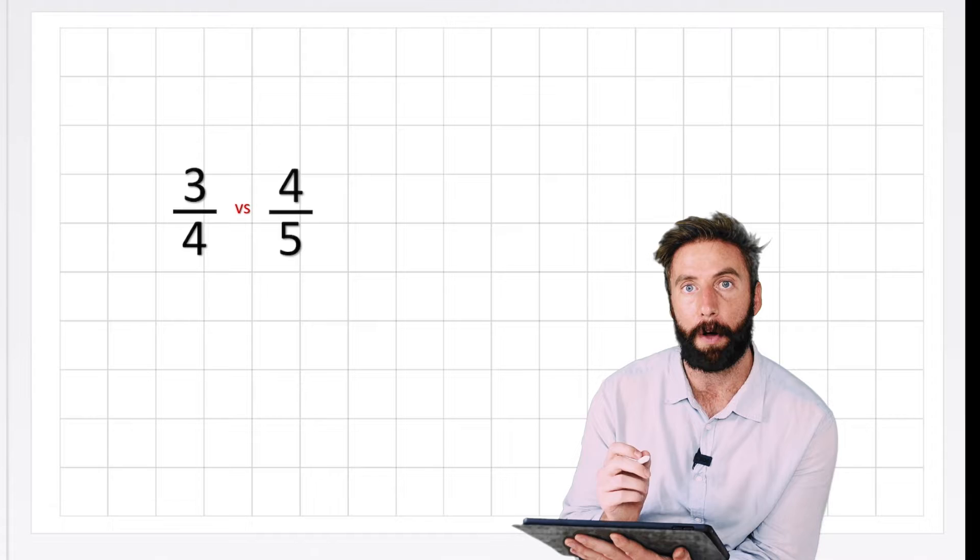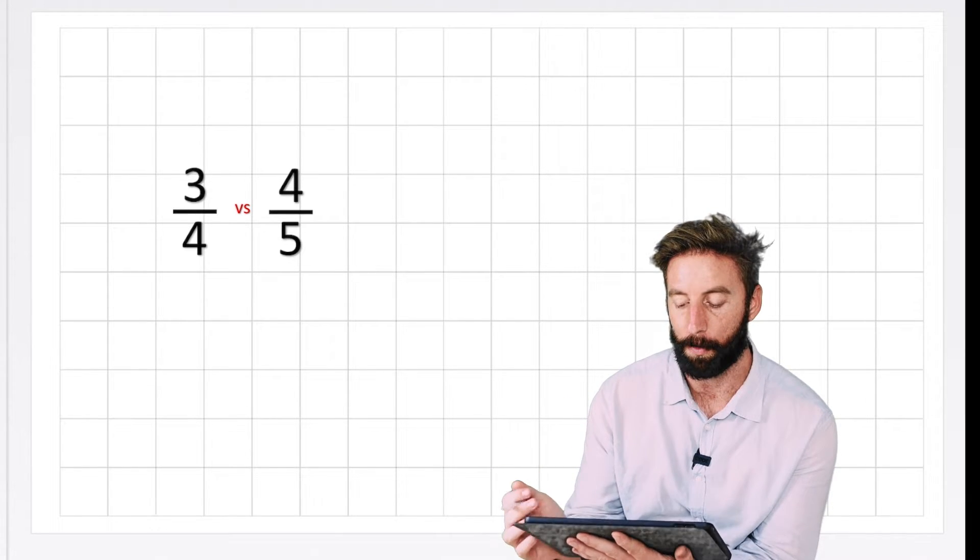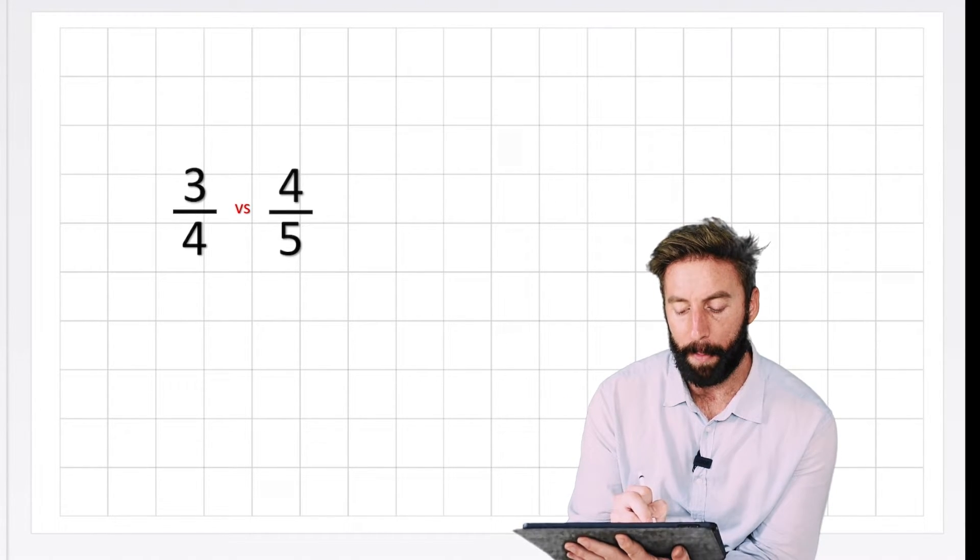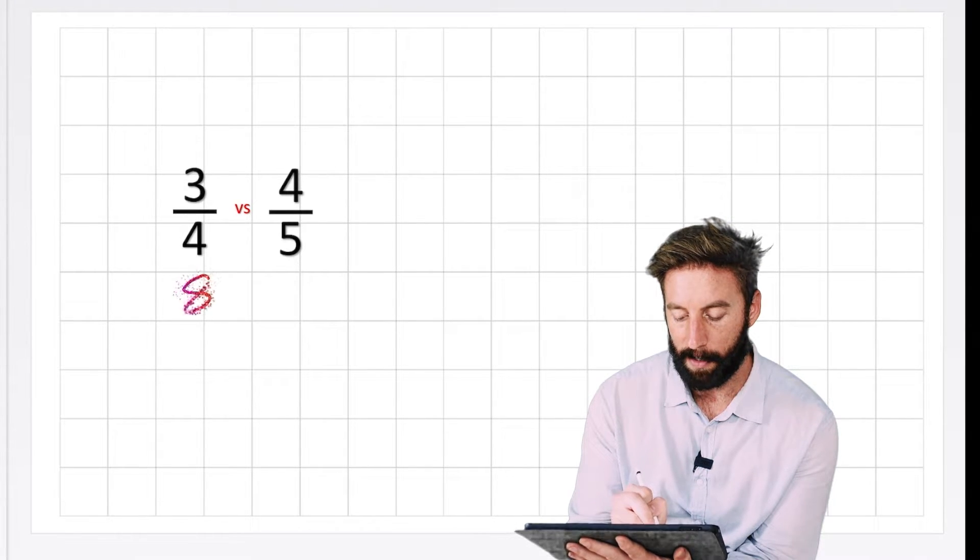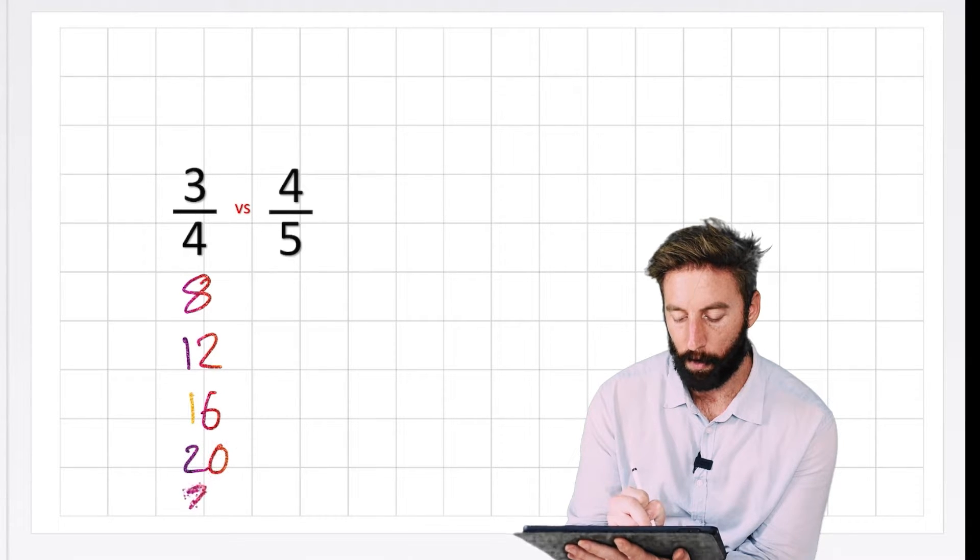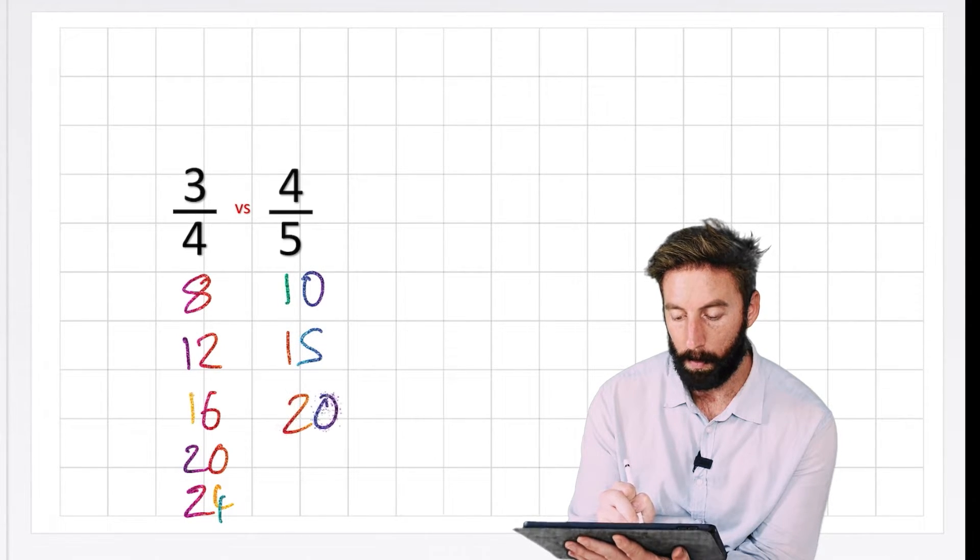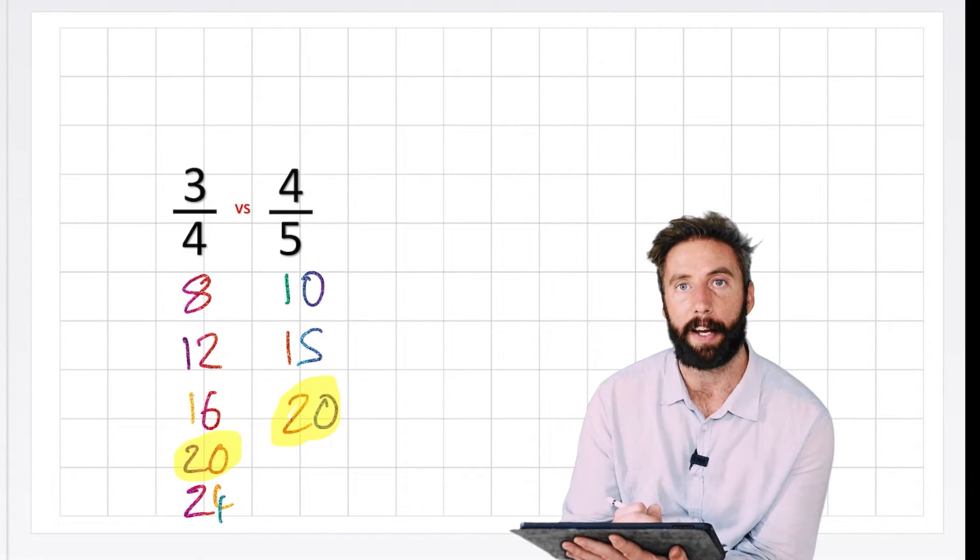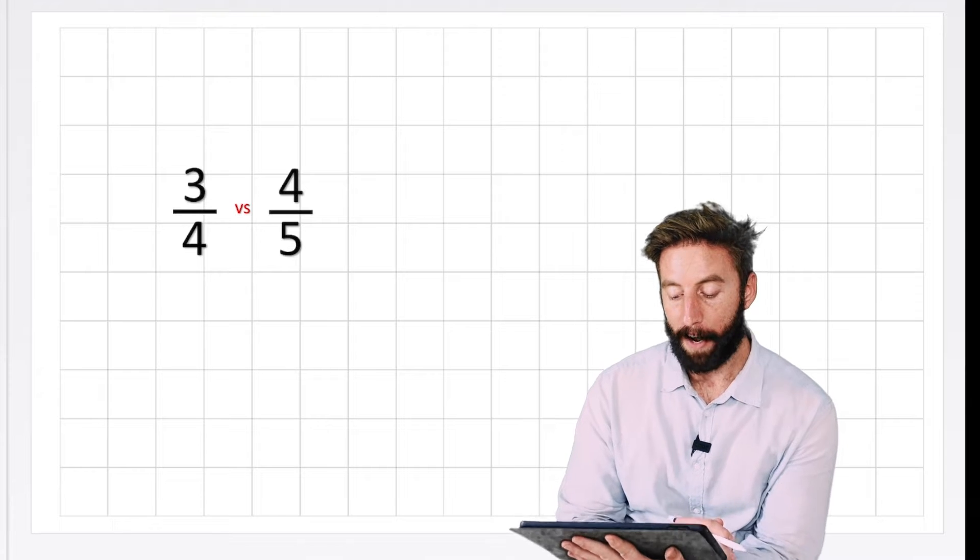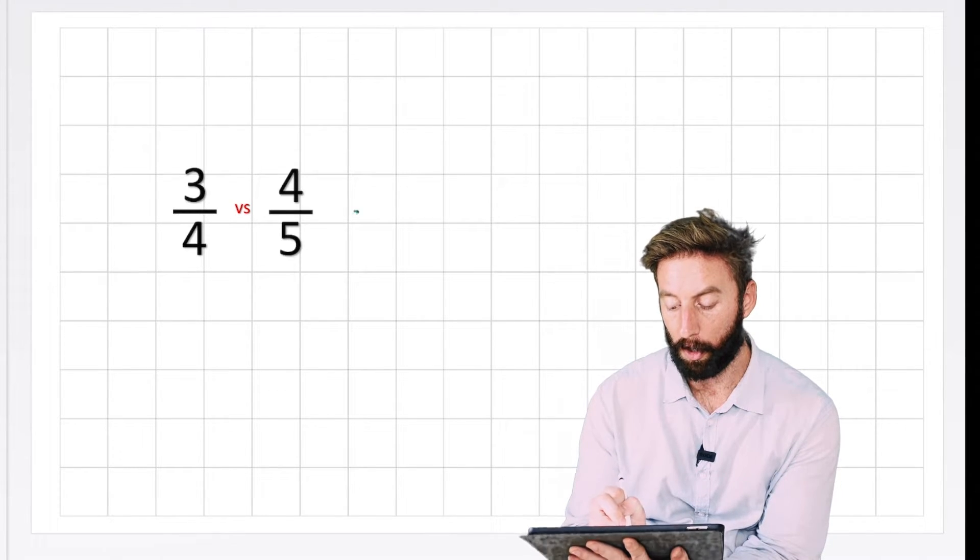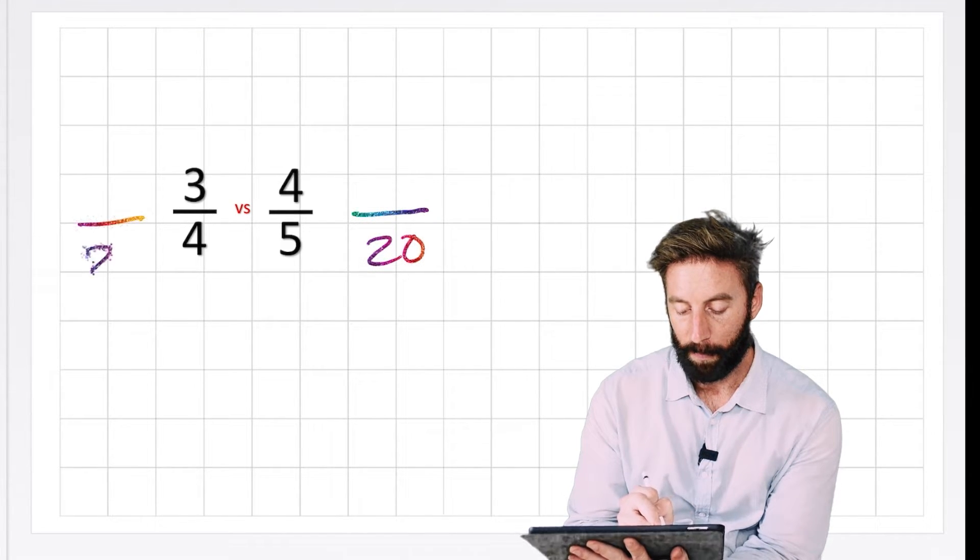So I now need to find a number that would be in both of their times tables. So I'm going to go up in a couple of their times tables and just show you a method to do this. So I could go 4, 8, 12, 16, 20, 24. I'm going to stop there for a moment. And in my 5 times table, I could do 5, 10, 15, 20. Oh, I see something. I have a 20 over here, and I have a 20 on this side. So now I'm going to make equivalent fractions for both of these, but with the denominator 20.